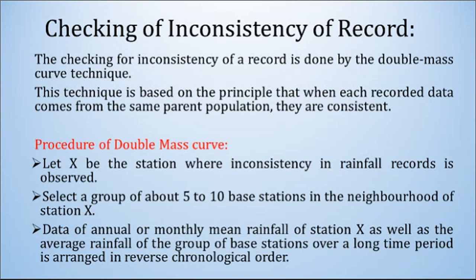The checking for inconsistency of a record is done by the double mass curve technique. This technique is based on the principle that when each recorded data comes from the same parent population, they are consistent. This means that for any particular rain gauge station over years, if you find the rainfall data, the average yearly rainfall for successive years must be consistent.